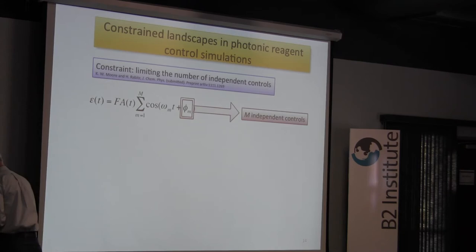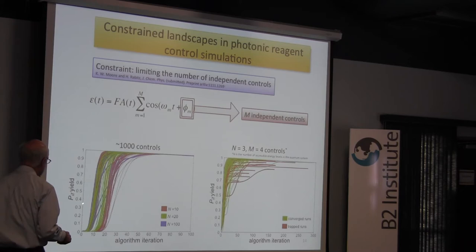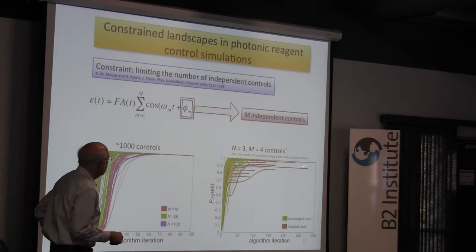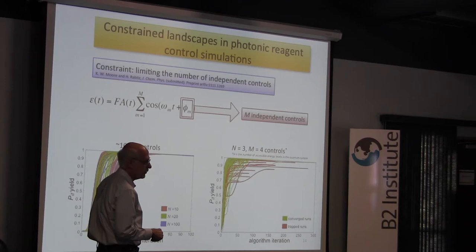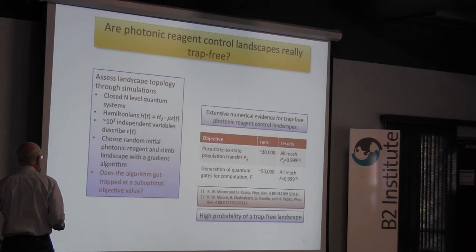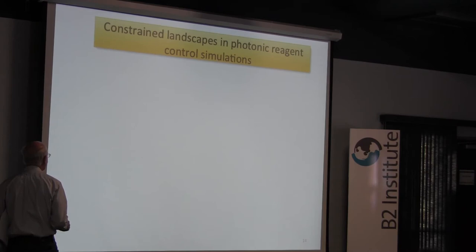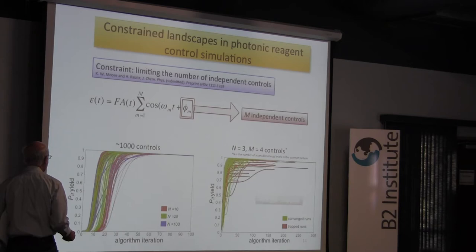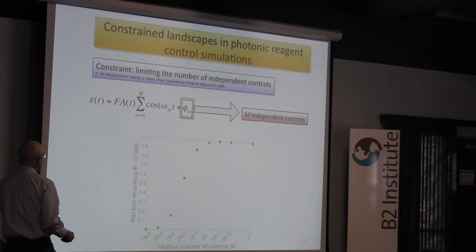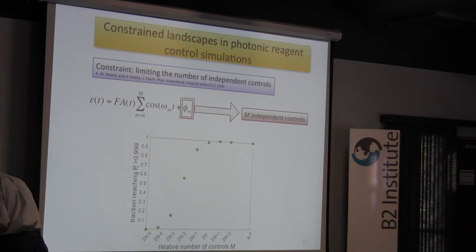With n equals 3 states going from 1 to 3, and m equals 4 controls — not many controls in this expansion — about 40% of these runs got stuck. Looking at this more carefully statistically, what's plotted is the number of controls expressed in terms of the number of Hilbert space states. The number of controls needed to avoid traps depends on n, and there's a break at 2n minus 2.